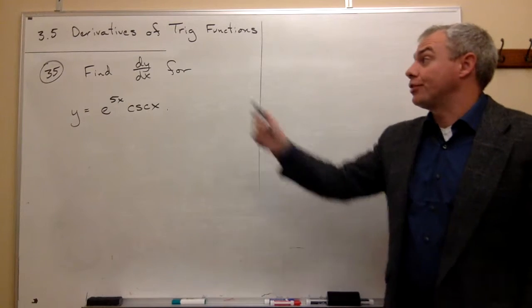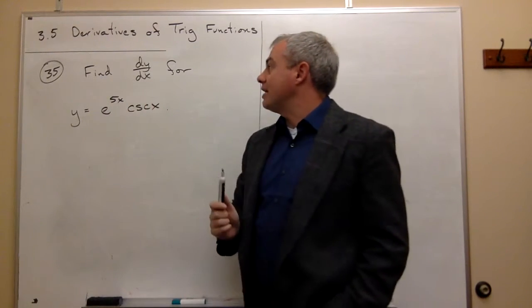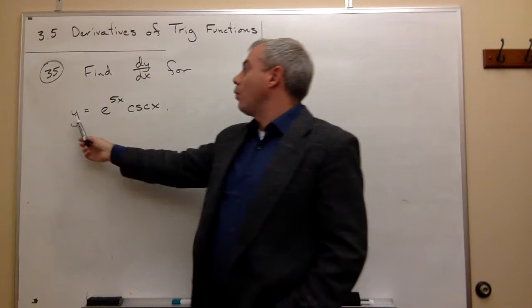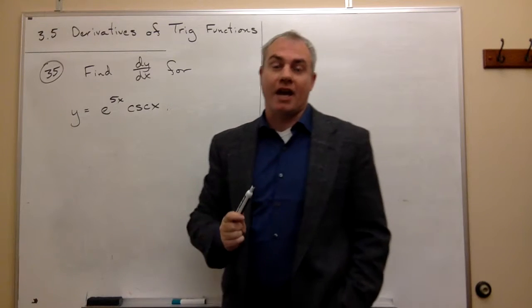Now, let's take a look at problem number 35. In problem 35, we'd like to find dy/dx for y equals e to the 5x times cosecant of x.